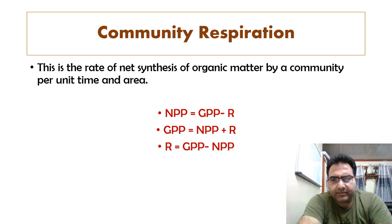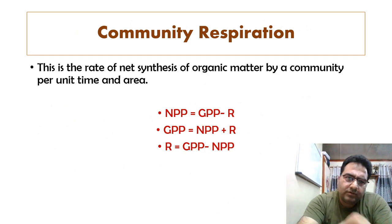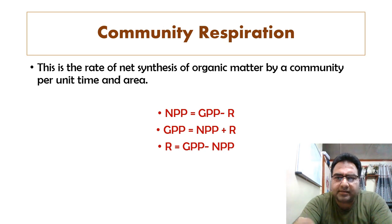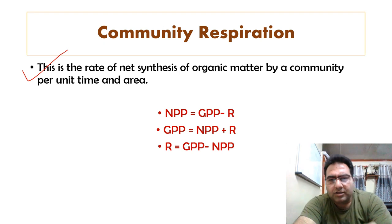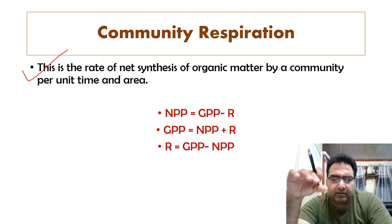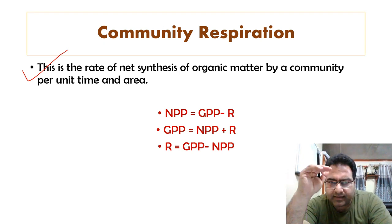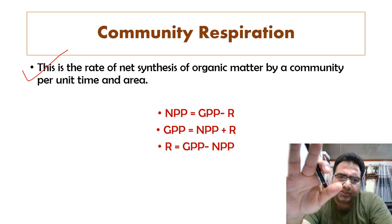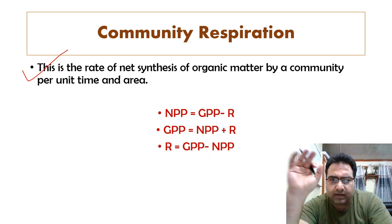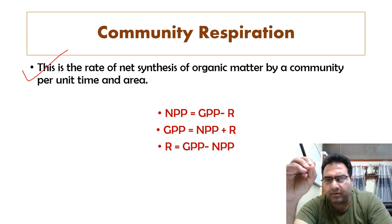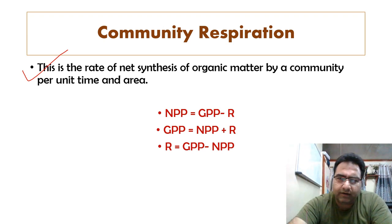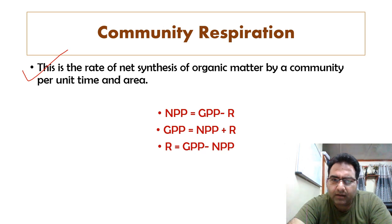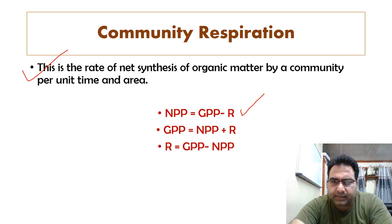Community respiration, the third concept, is the rate of net synthesis of organic matter by a community per unit time per unit area. When we take the community overall, this rate of net synthesis is what we call community respiration. The formulas to remember: NPP = GPP minus respiration.